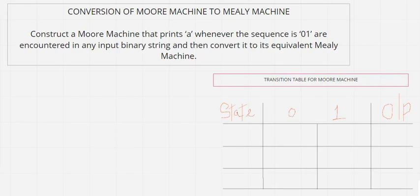Hello everyone, welcome to the video lecture series of Theory of Automata and Formal Languages. We are in unit number one, learning about finite automata. In my previous video lecture we completed the topic about Moore machine and Mealy machine, and we designed both. Now in this video lecture we will look into one example where we will try to convert a given Moore machine to a Mealy machine.